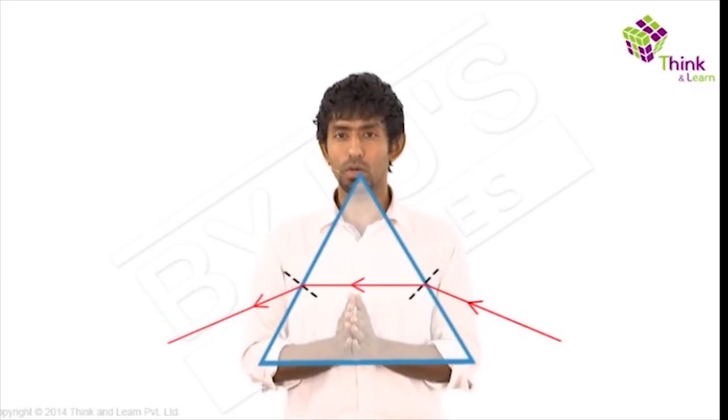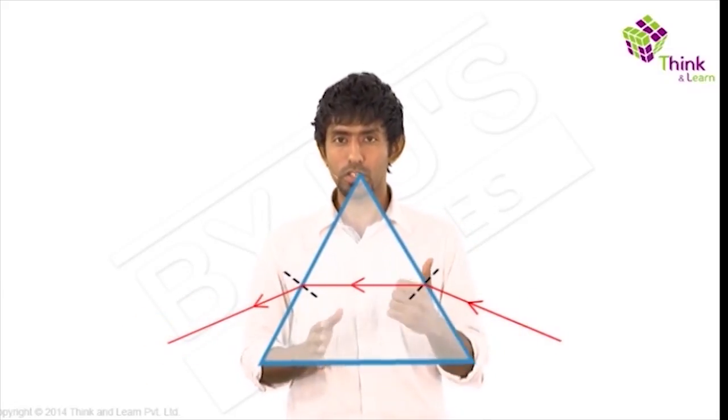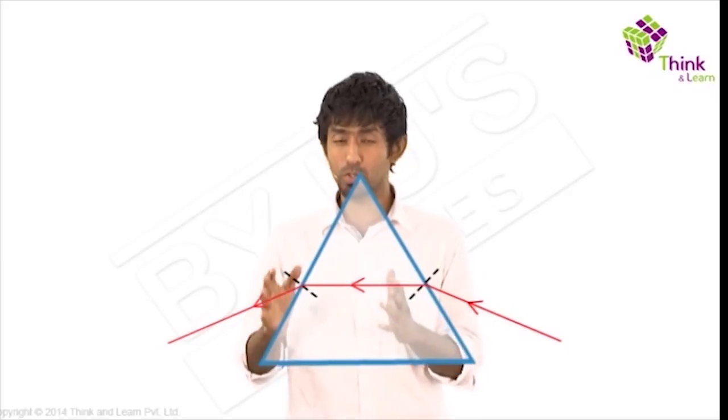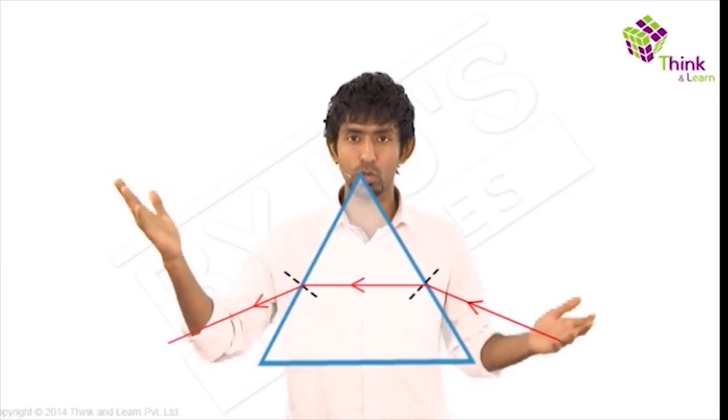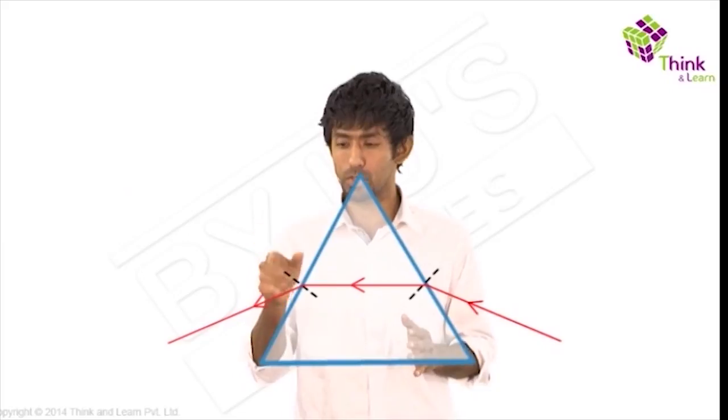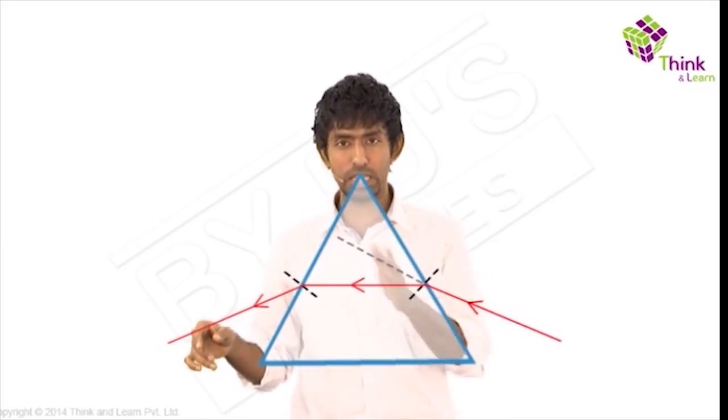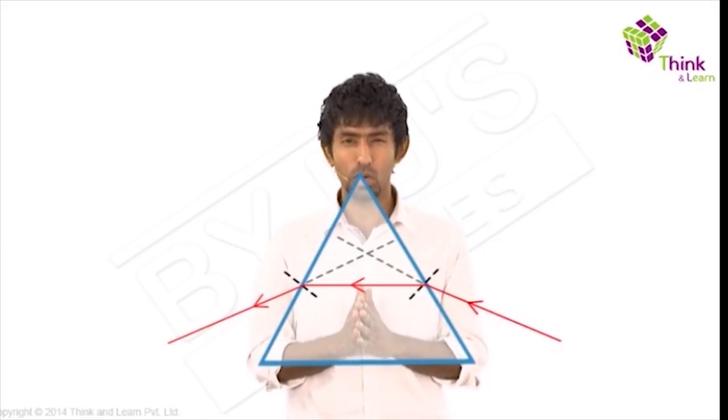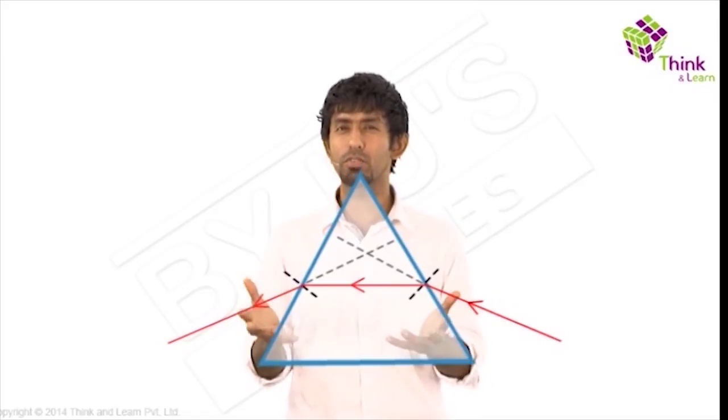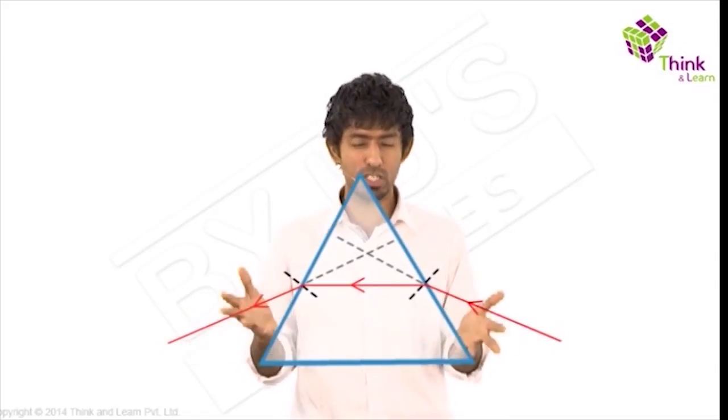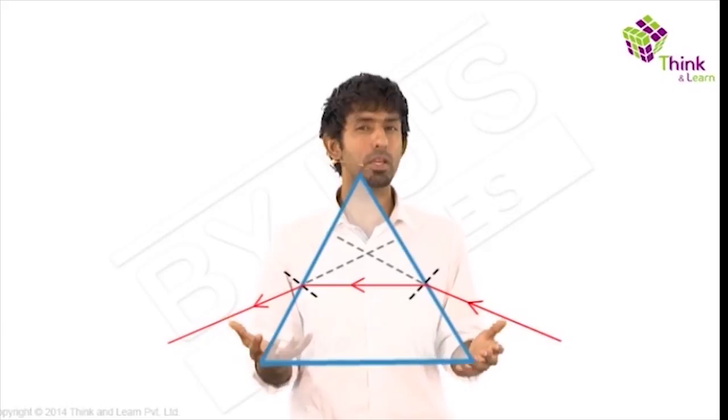Now what do you observe here? The first thing I want you to observe is that if this prism was not there, light would have continued to go that way. But because of this prism, it's not going this way. So if you were to extend this line and that line backwards, one of these is going to be called the deviation. This light has been deviated.